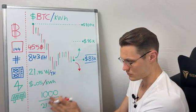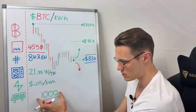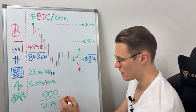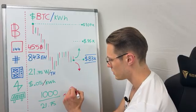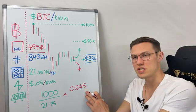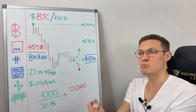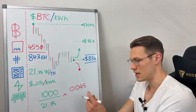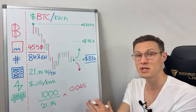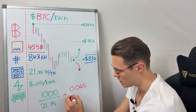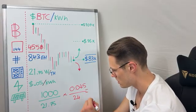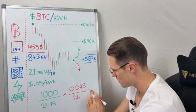Taking our 46 terahash (from dividing 1,000 watts by 21.75) and multiplying by 0.045, we get about 4.5 cents of Bitcoin per terahash per day. If you do this calculation you get about two dollars' worth of Bitcoin per day. To bring it down to per hour, multiply by 46 and divide by 24.